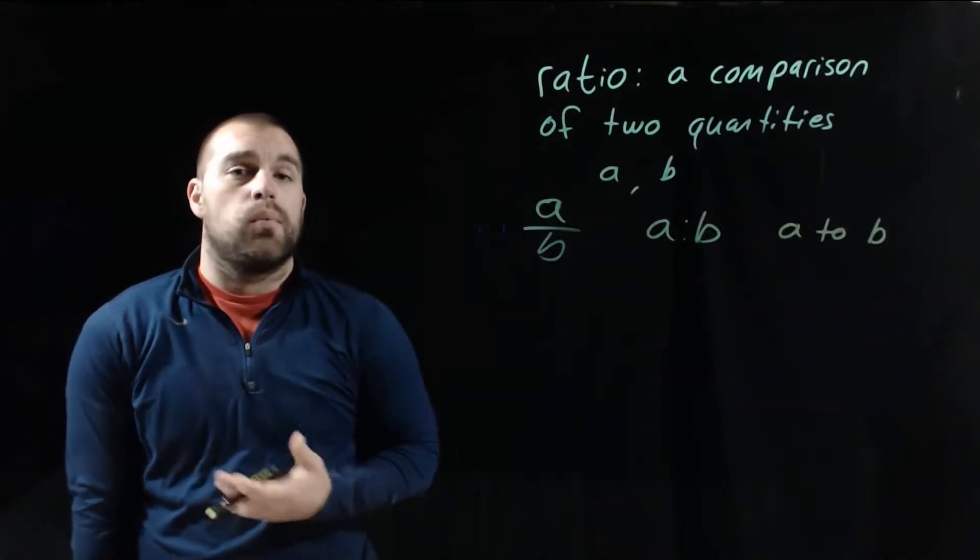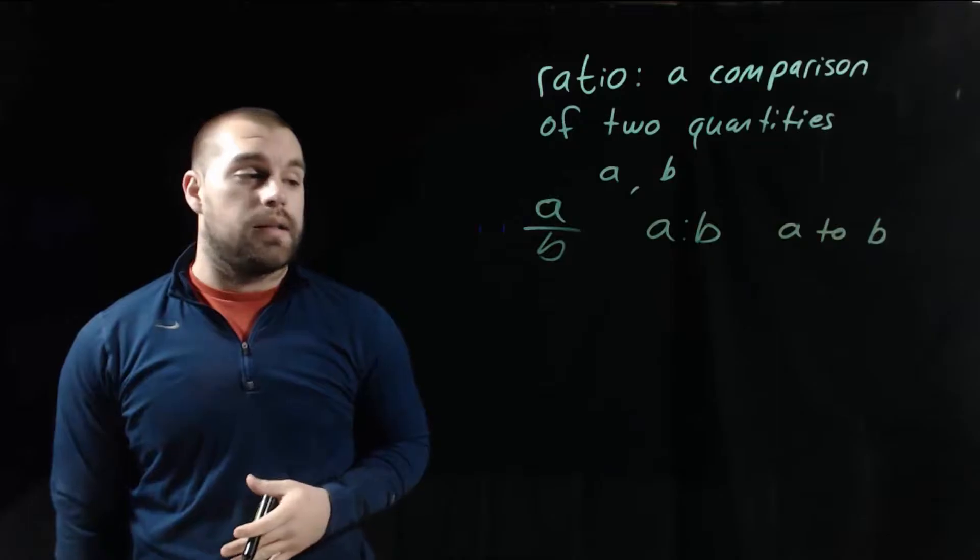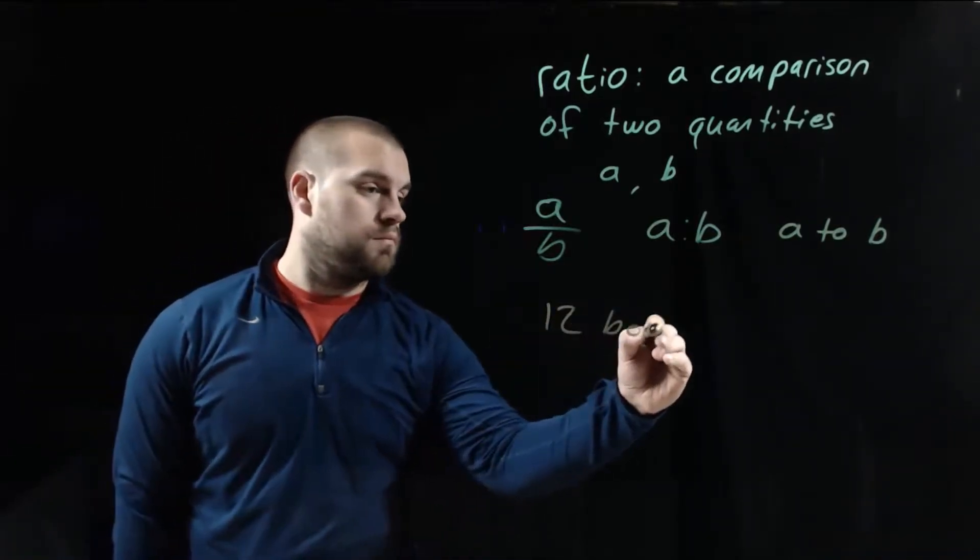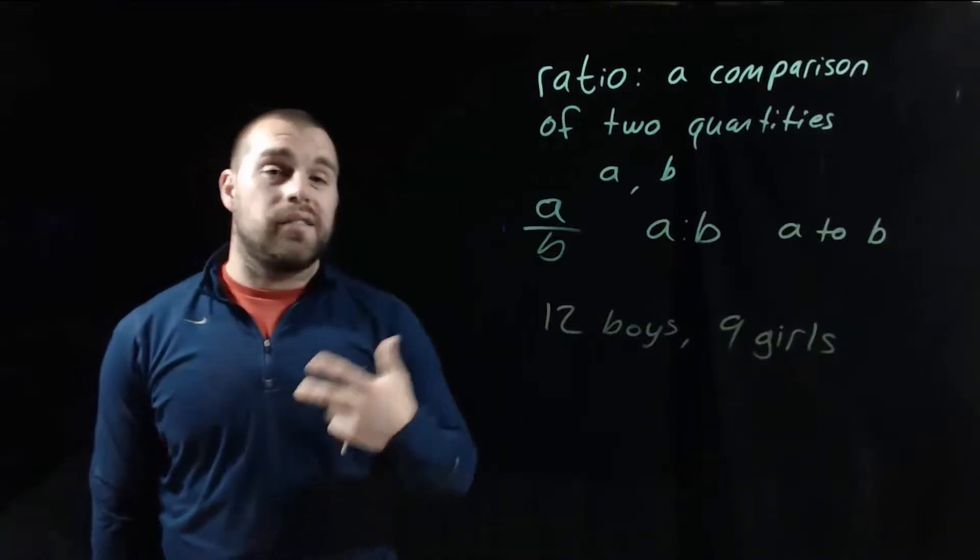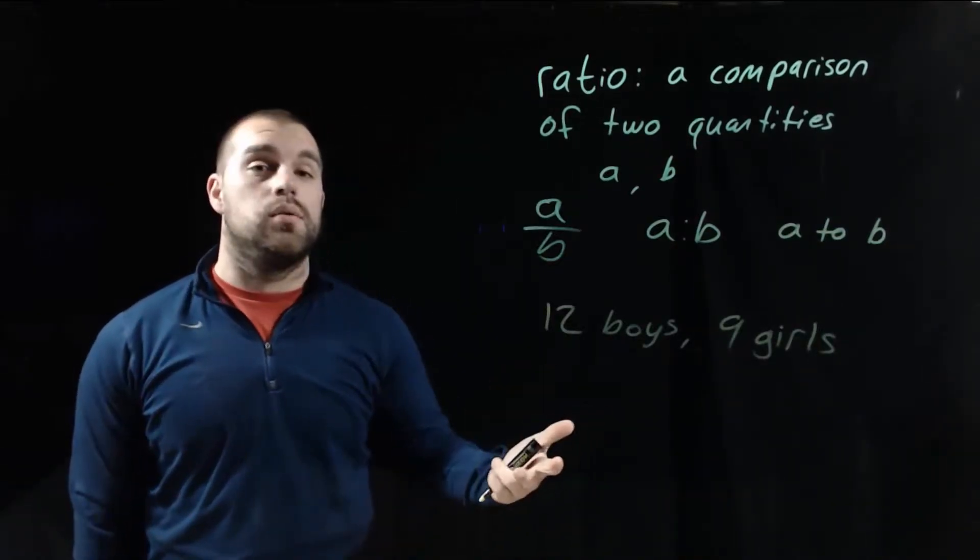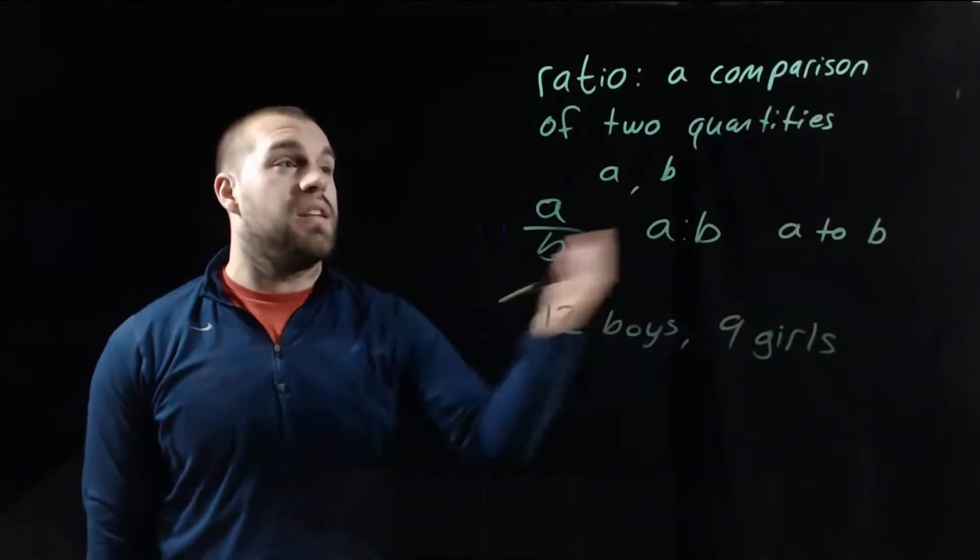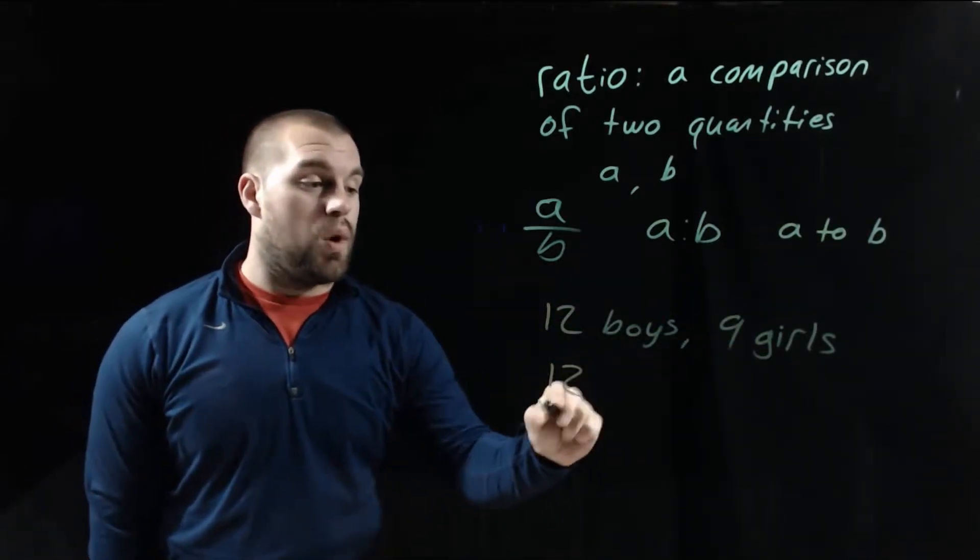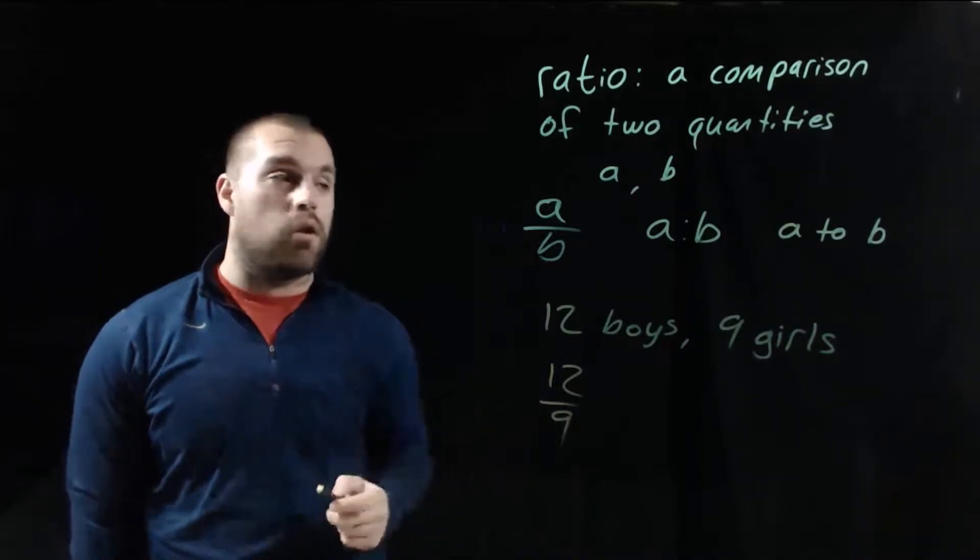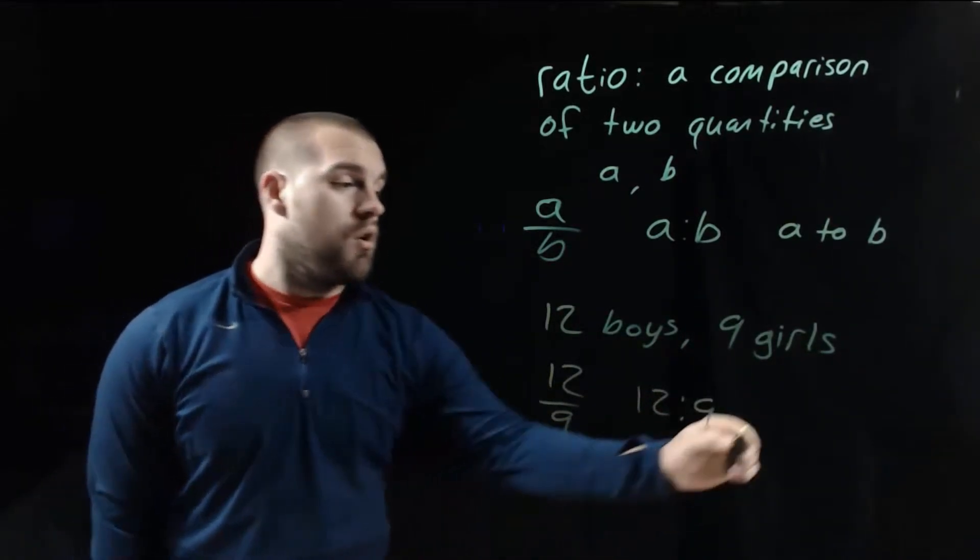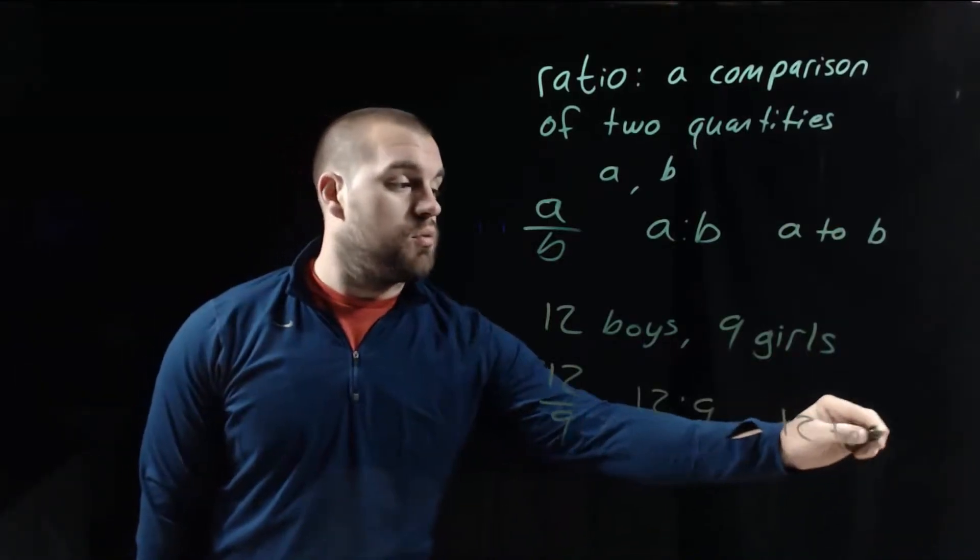Let's look at an example where we're dealing with students in a class. Let's say we've got 12 boys in class and 9 girls. If we wanted to compare the number of boys to the number of girls, we could set up a fraction or any of these other kinds of ratios. We could go 12 over 9, or we could say 12 to 9 with the colon, or we could just say 12 to 9.